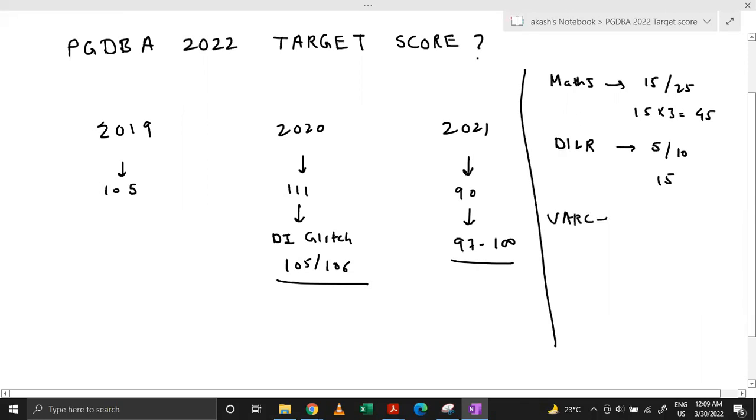In VARC, the difficulty of 2021 paper was the toughest one in case of VARC. Now in that one, one RC was still very straightforward and anyone could have scored 5 out of 5 marks over there. So let's take 5 marks over there. And two para-jumpers were quite straightforward. So seven questions were quite doable. I am not considering the fill in the blanks. I am not considering the other RC. I am just calculating what should have been the ideal score. So in that case, you will have 7 out of 15 questions.